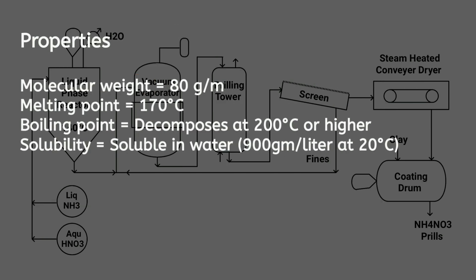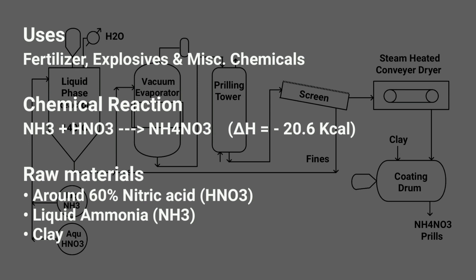Ammonium nitrate has a molecular weight of 80.05 grams per mole, a melting point of 170 degrees Celsius, and a boiling point of 200 degrees Celsius with decomposition. It readily dissolves in water and is used in fertilizers, explosives, and miscellaneous chemicals. The main reaction involved in its manufacture is as follows.